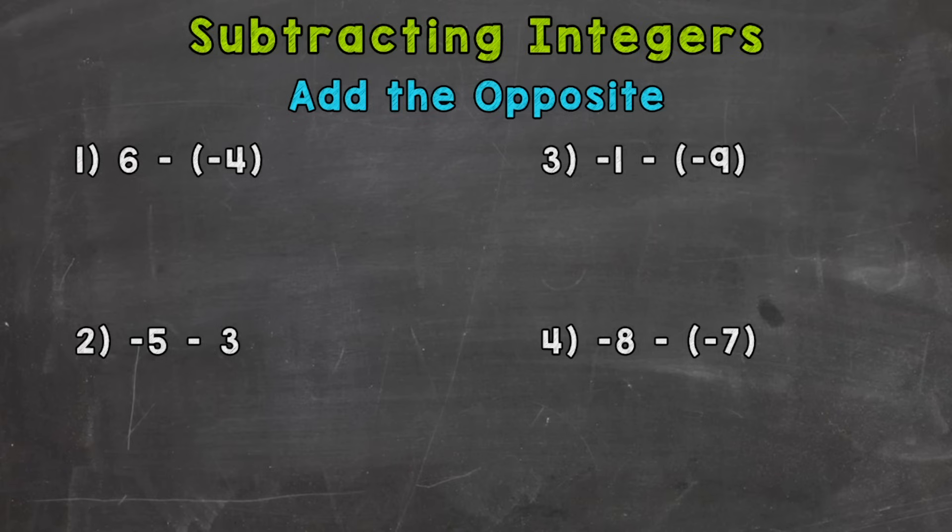So let's jump into number one, where we have 6 minus negative 4. So let's add the opposite. We start with a positive 6, and we add the opposite of negative 4, which is a positive 4, and 6 plus 4 gives us 10. And that's our final answer, a positive 10.